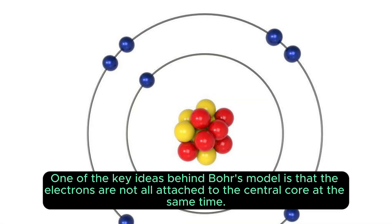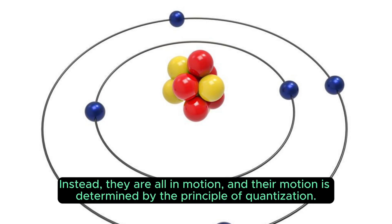One of the key ideas behind Bohr's model is that the electrons are not all attached to the central core at the same time. Instead, they are all in motion, and their motion is determined by the principle of quantization.